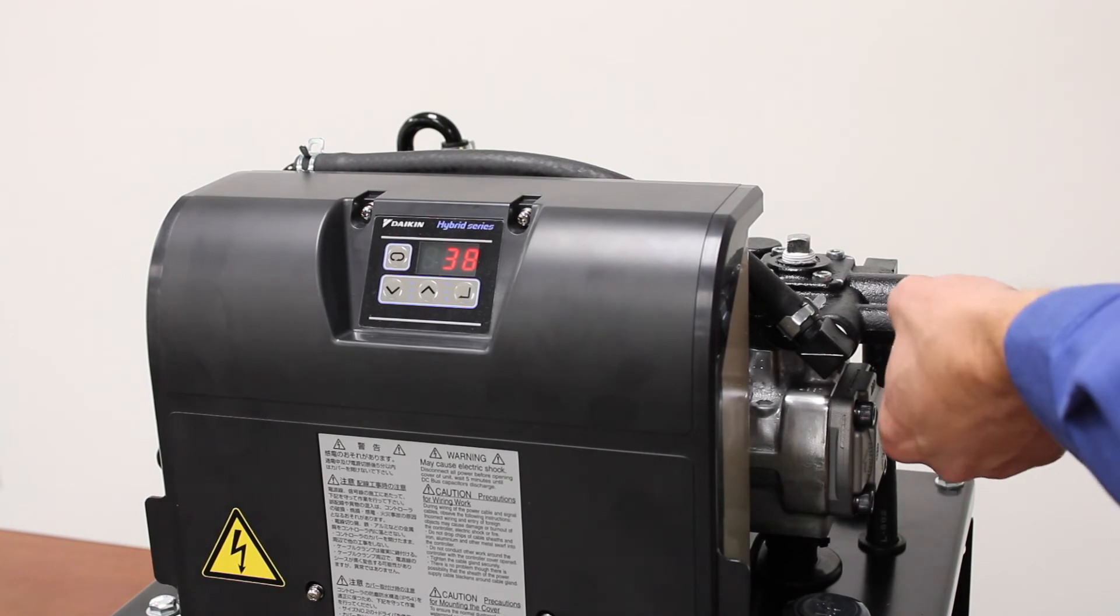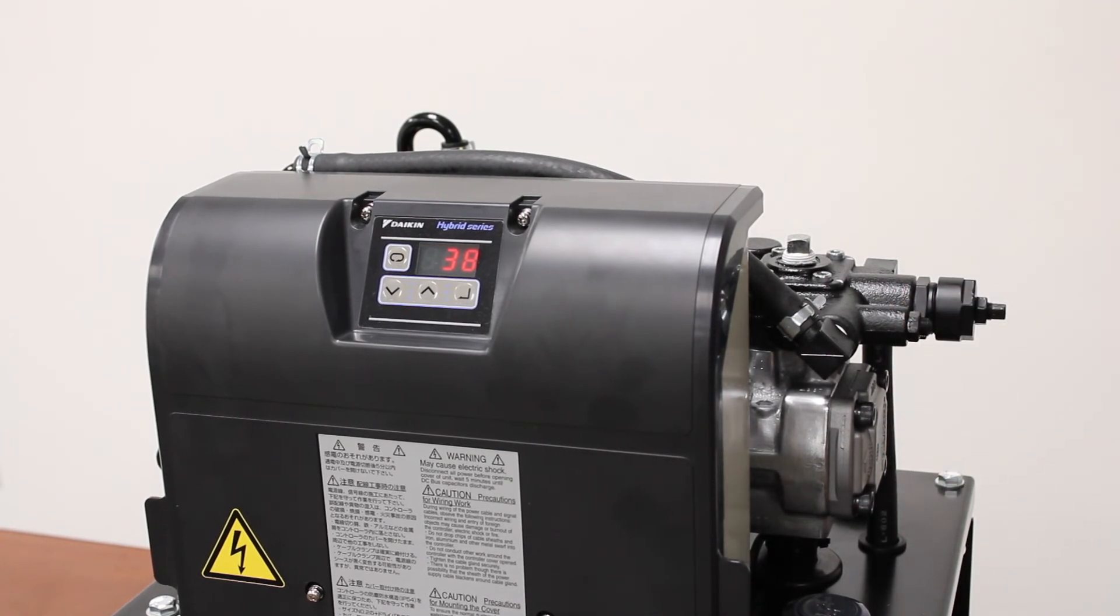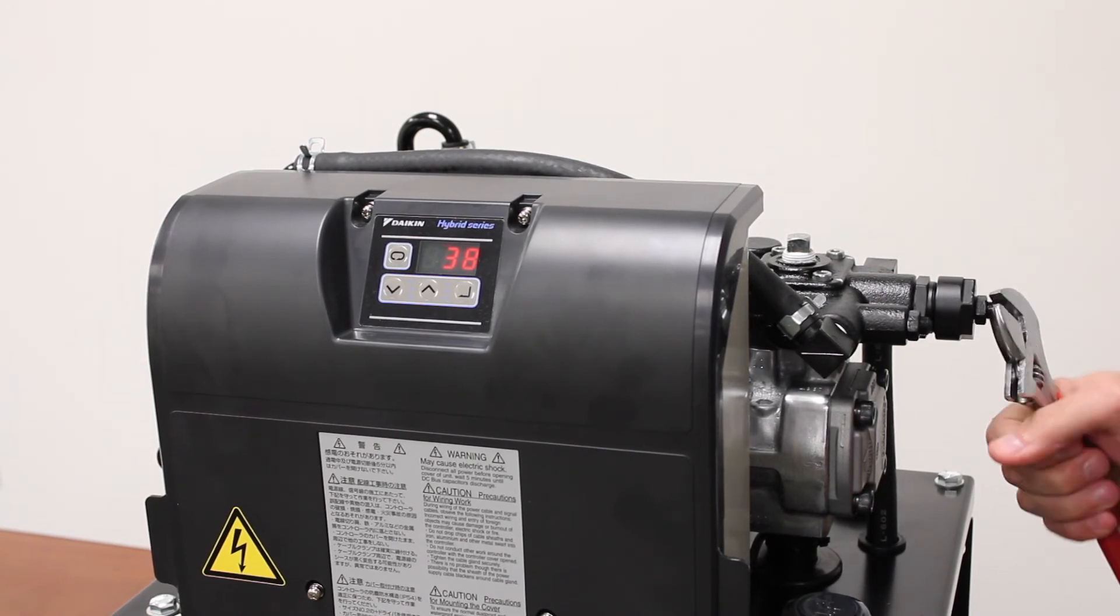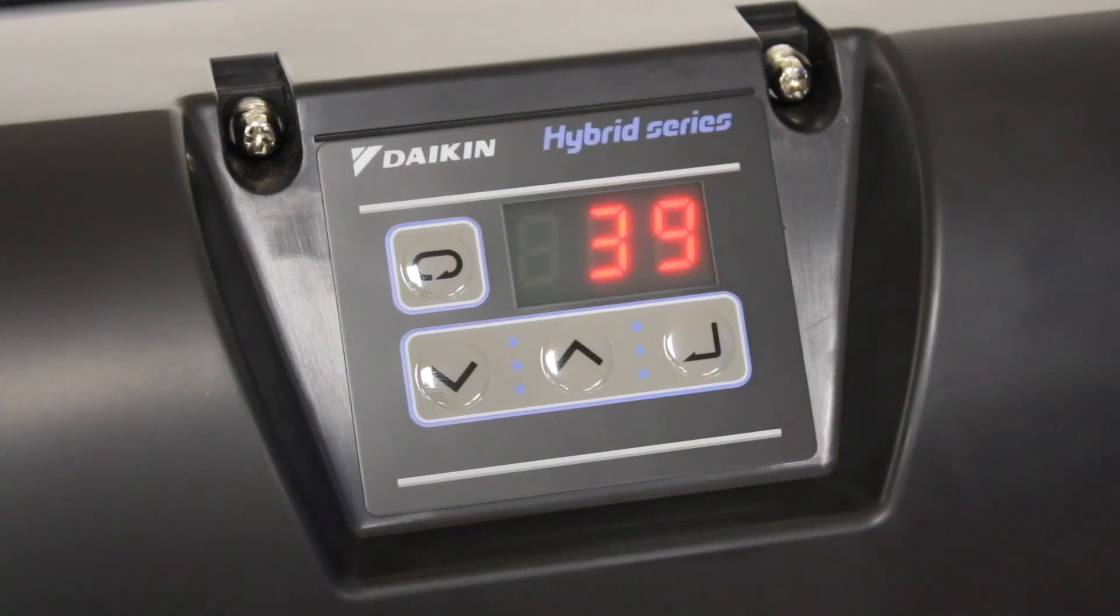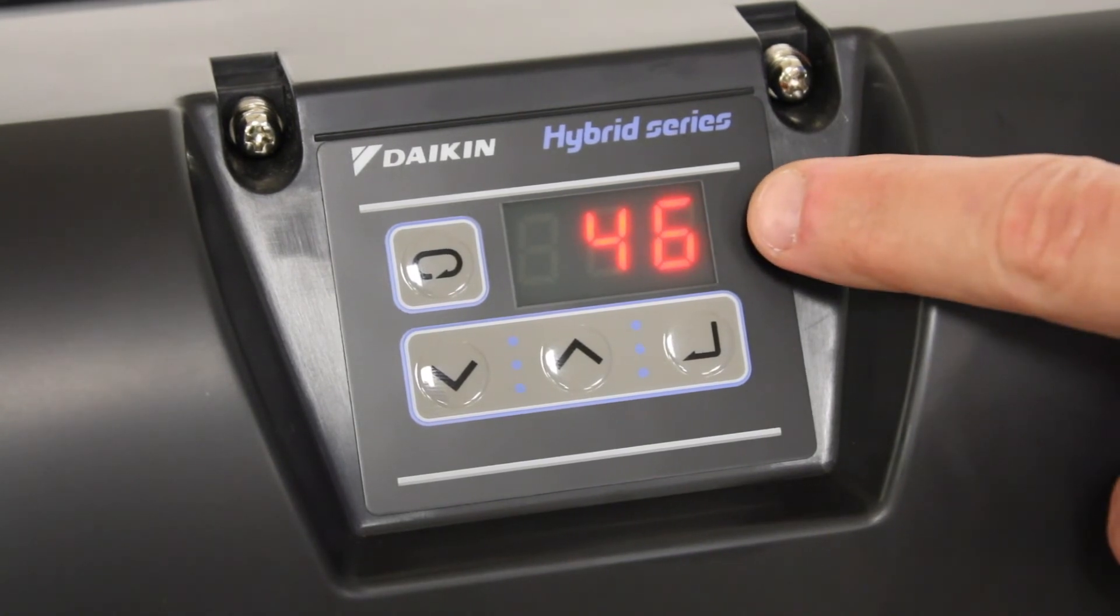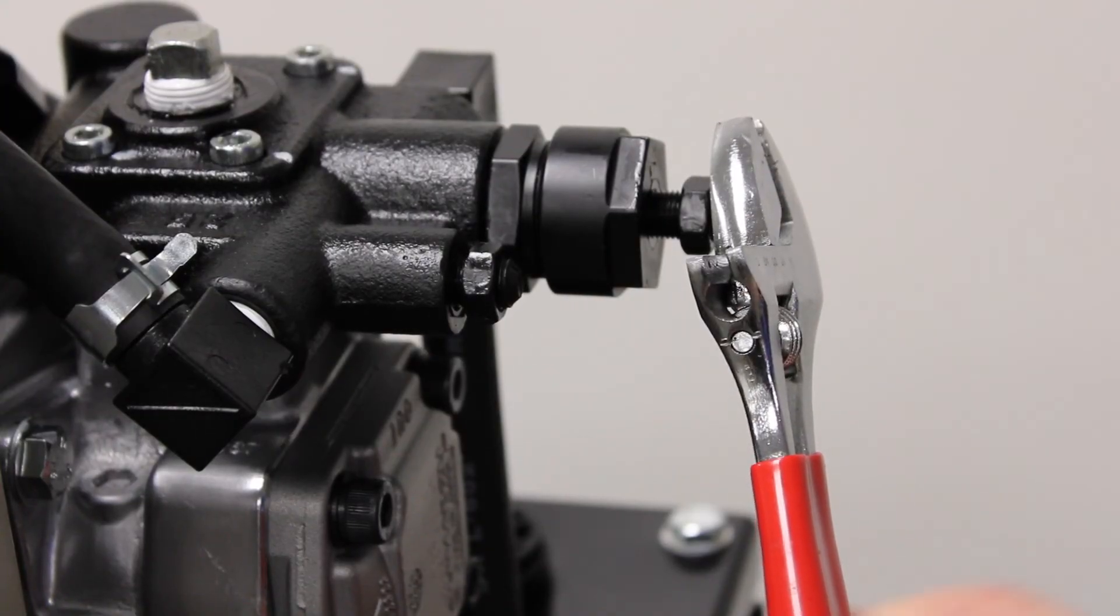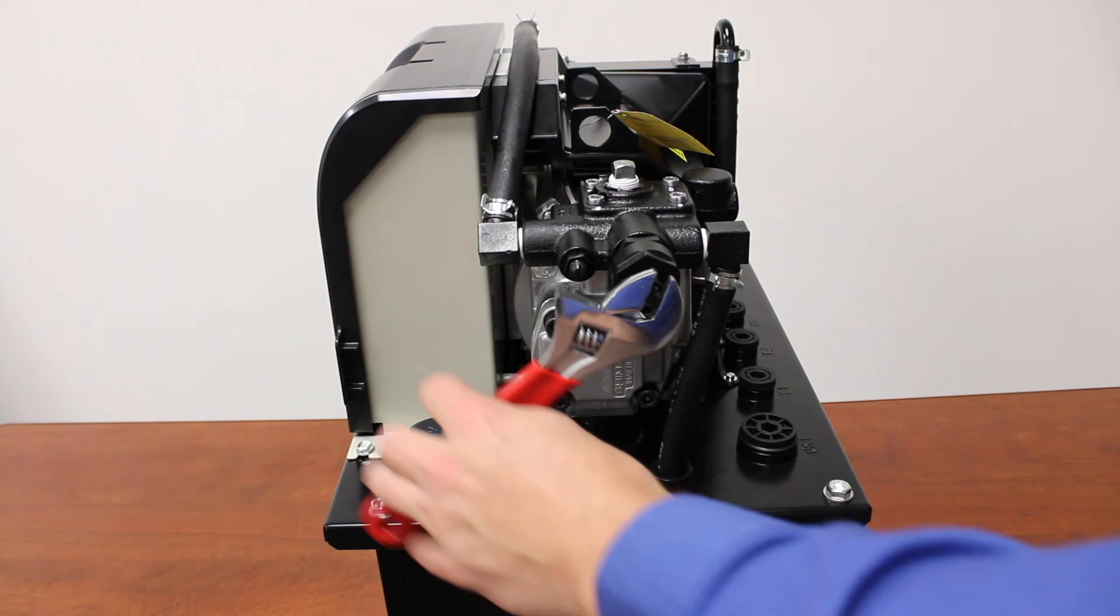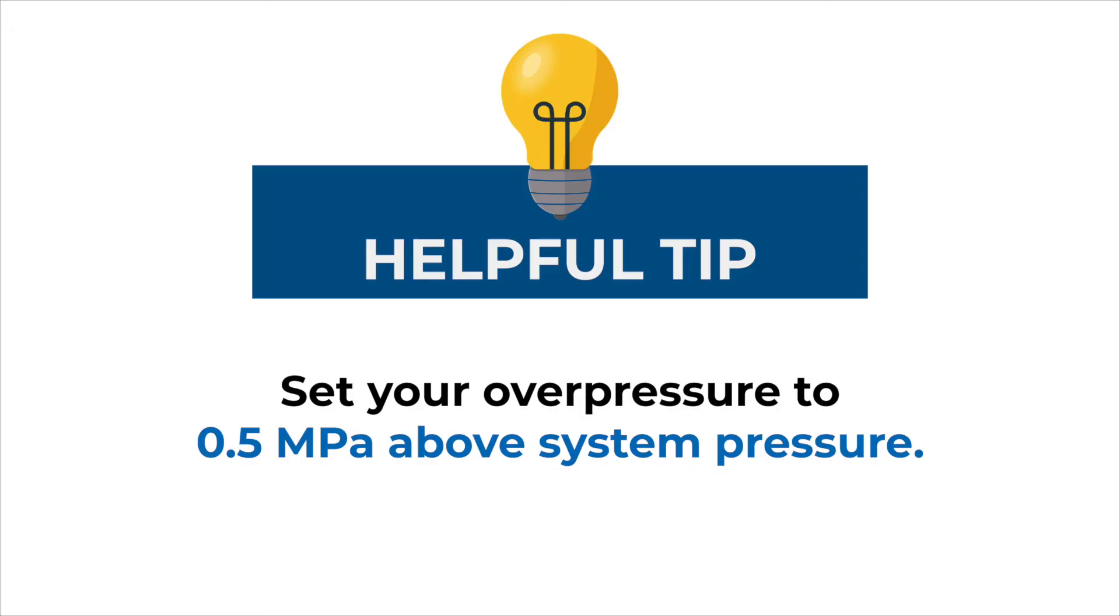Once there, we'll tighten down this jam nut, then we can set our over pressure relief. We will start turning this out counterclockwise until we see the value rise on our display. Right when the motor RPM starts to rise, you can stop turning counterclockwise and turn back in slowly clockwise till you come back to 38 on the screen.